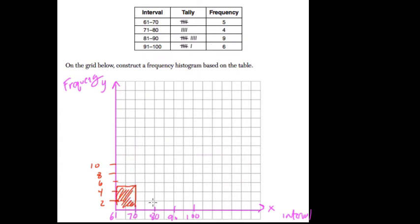Okay, next we have 4. Okay, then we have 9, it's about halfway here, and then last is 6.